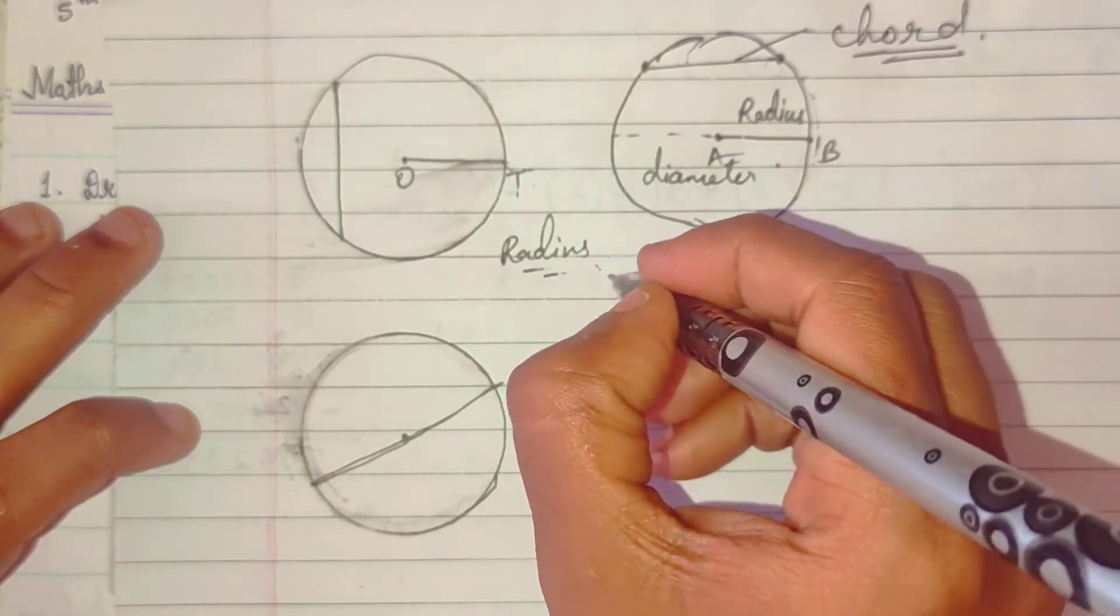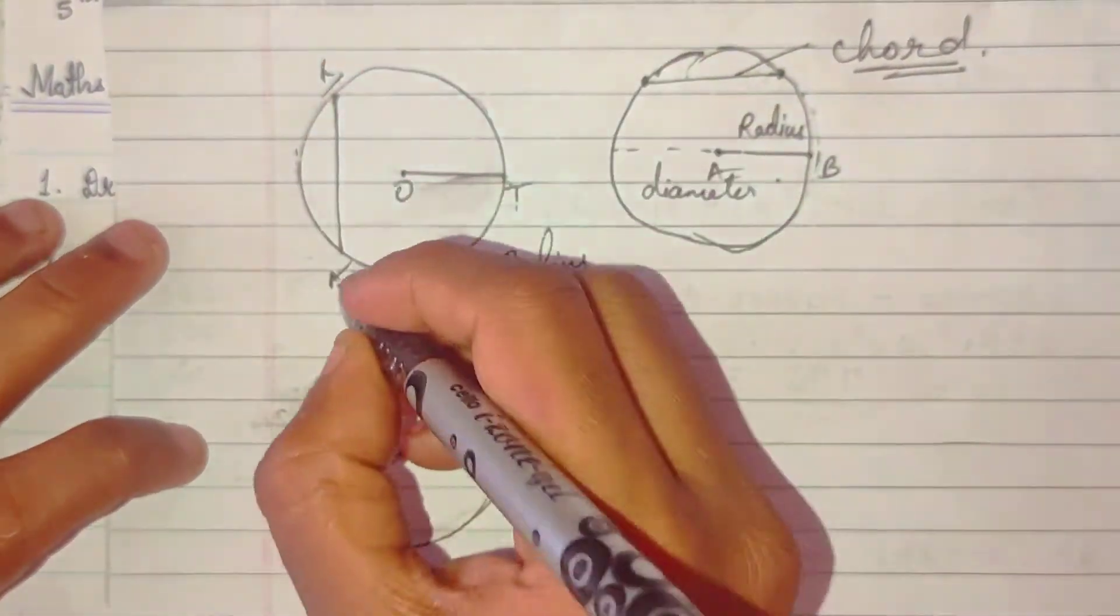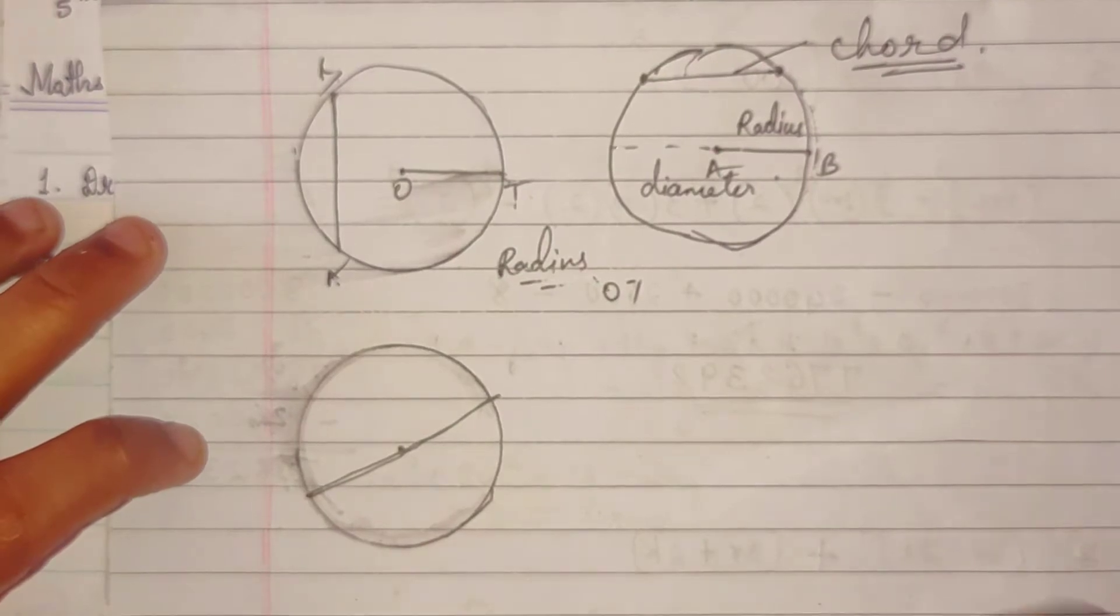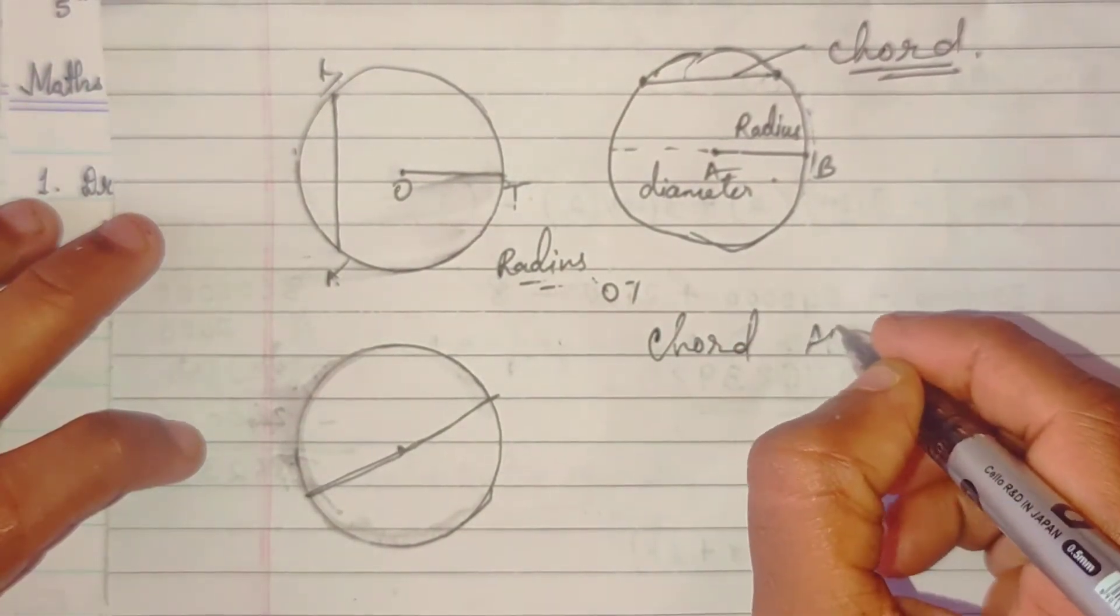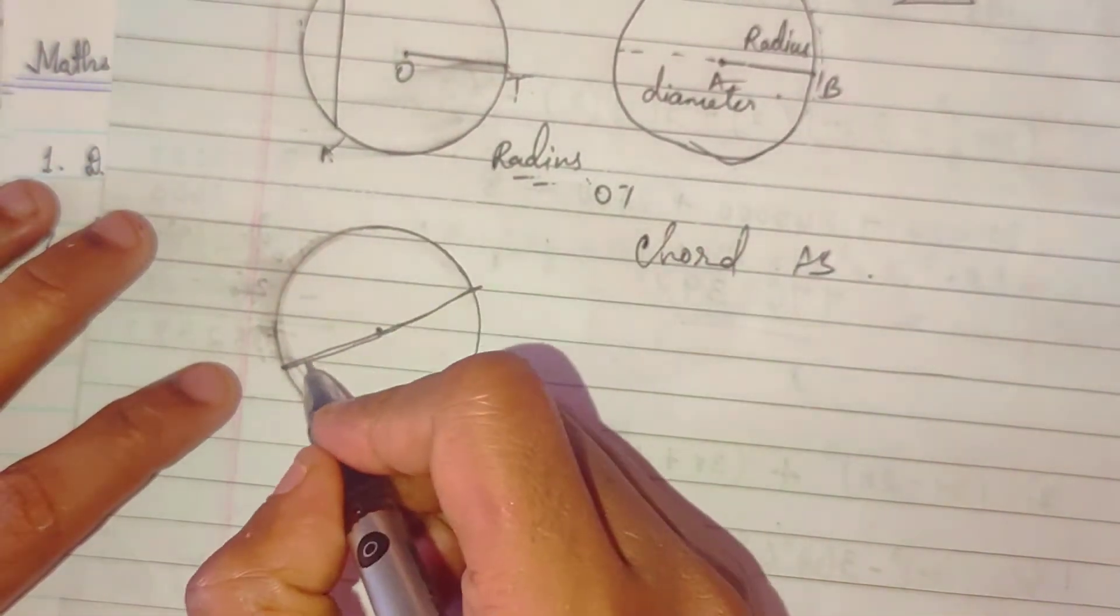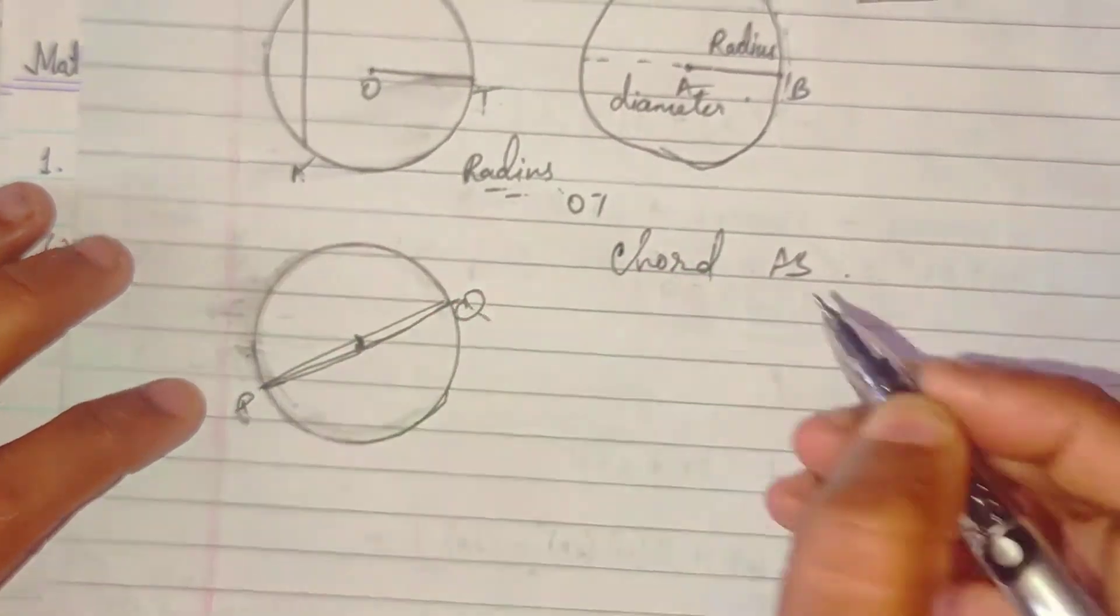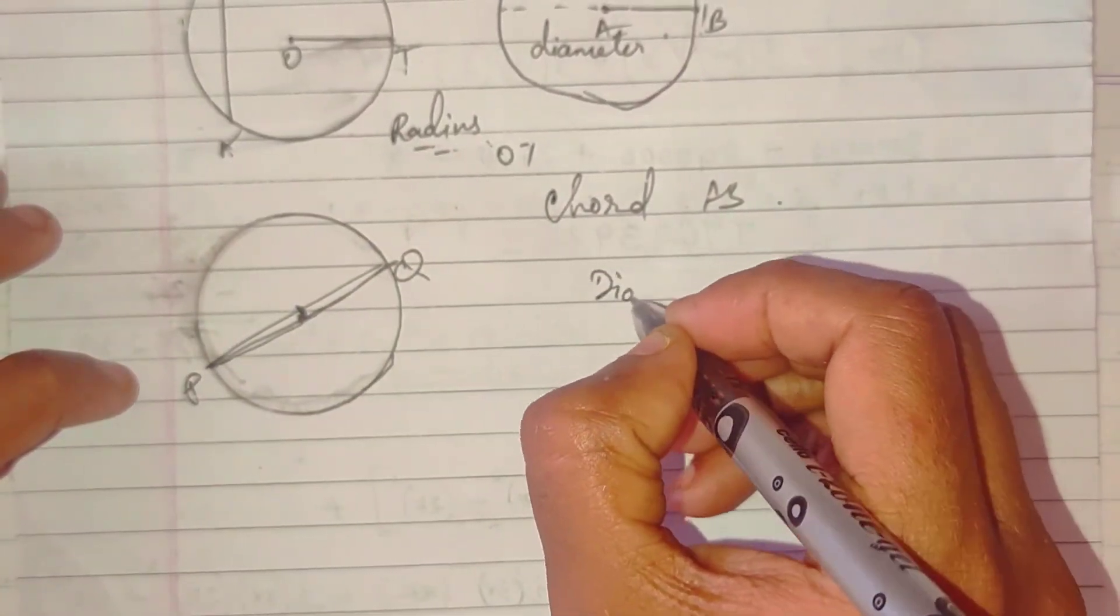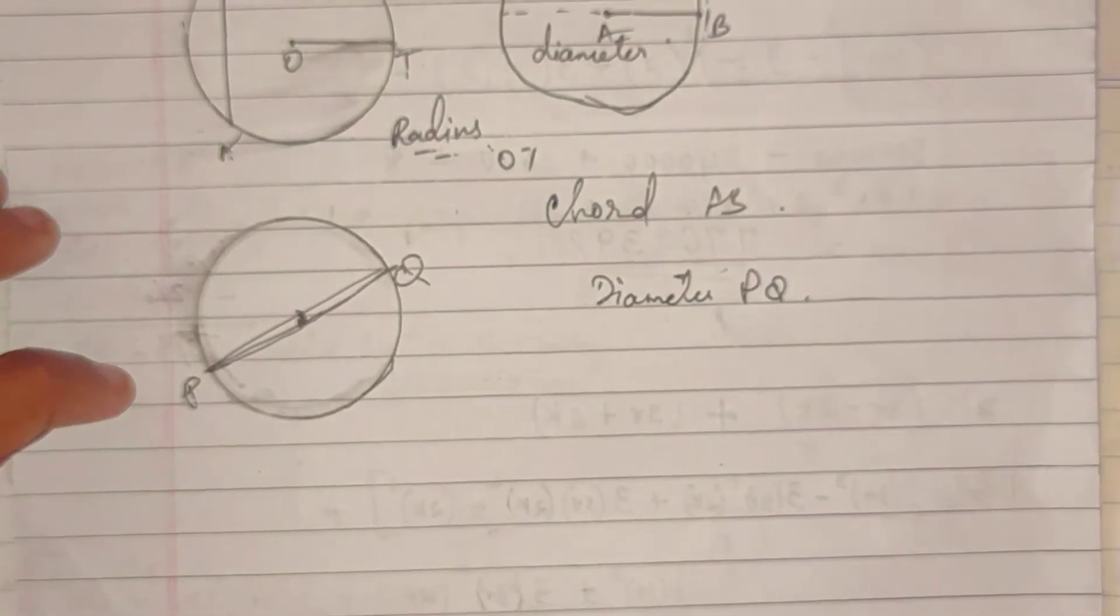Toh agar aapko puchha hai radius, that is OT. And then ye, AB. This is said to be AB, chord AB. And then, see this, this is the diameter, because it has center. So, diameter PQ.